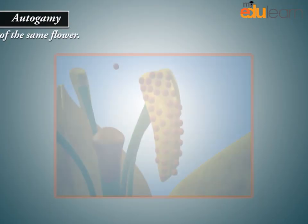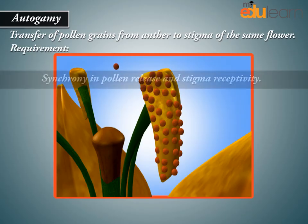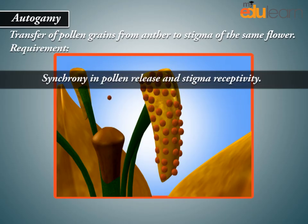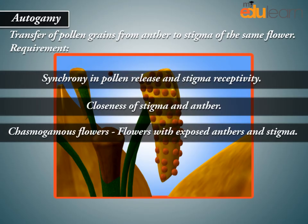Autogamy is the transfer of pollen grains from anther to stigma of the same flower. Requirements include synchrony in pollen release and stigma receptivity, and closeness of stigma and anther. Chasmogamous flowers are flowers with exposed anthers and stigma.